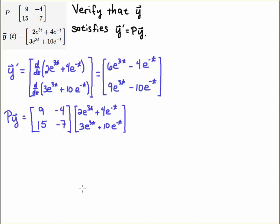So I'm going to take P times y, so here's the matrix P. I'm going to multiply it by this vector y, so I'm going to take this component here, this top component vector, multiply it by 9, add it to minus, and then take this second component and multiply it by minus 4. I'll take this top component, multiply it by 15, take the bottom component and multiply it by minus 7.